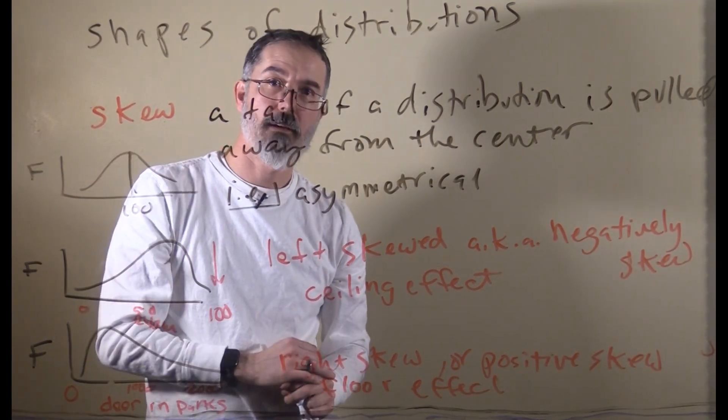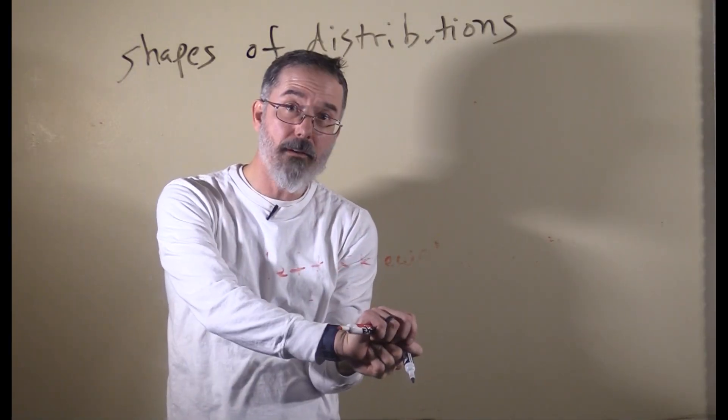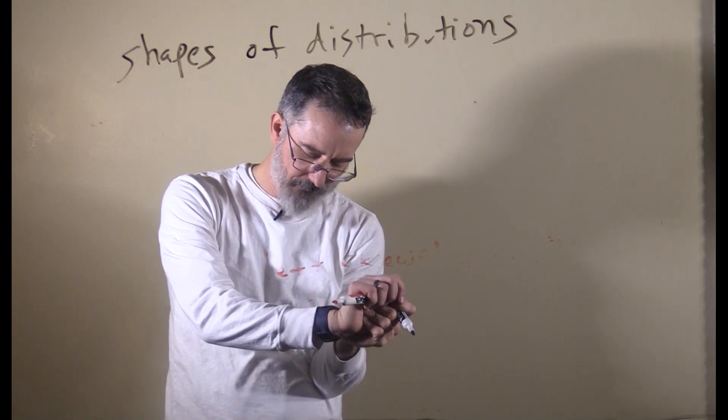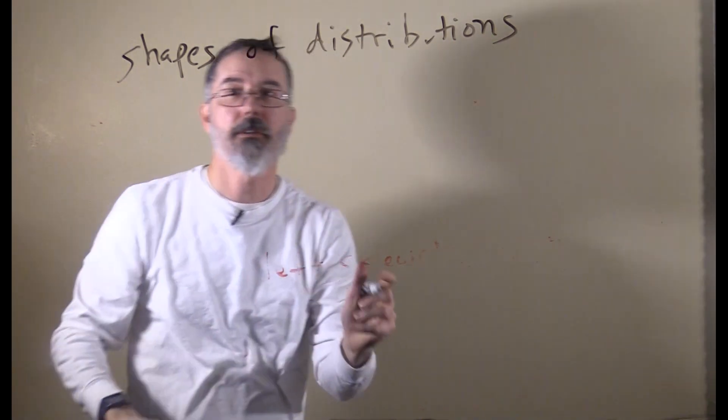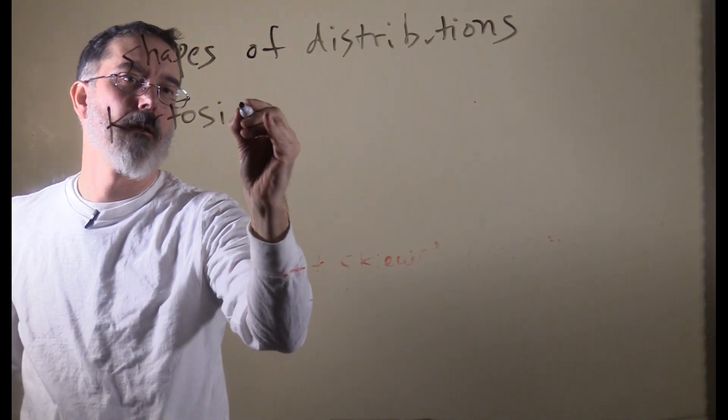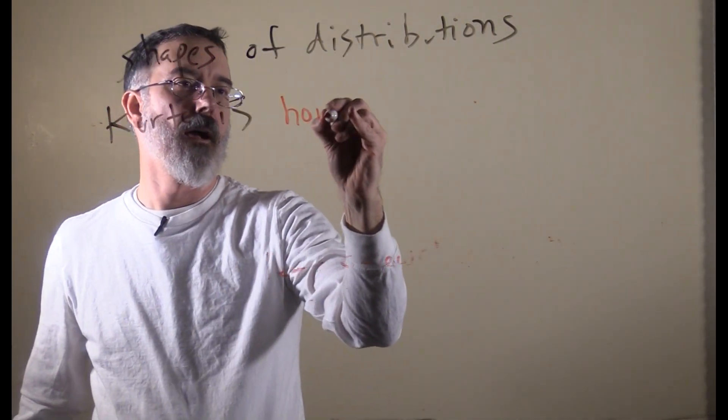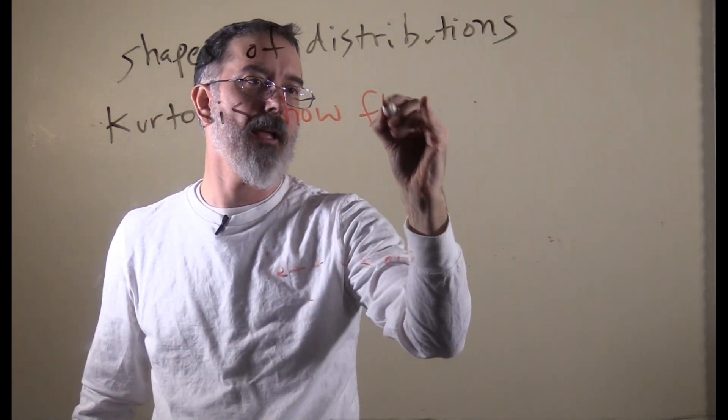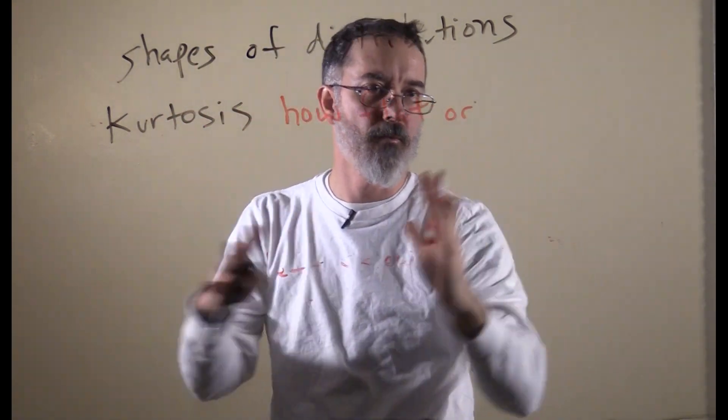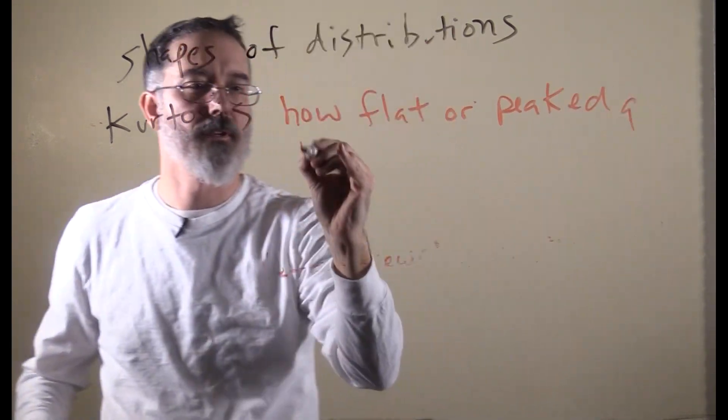Skew is another one of these important characteristics of distributions. A whole other important feature of the shapes of distribution is called kurtosis. This refers to how flat or peaked or squished together a distribution is.